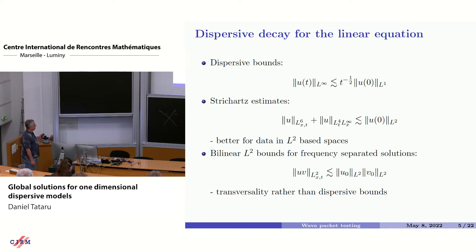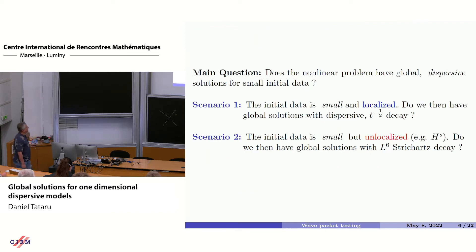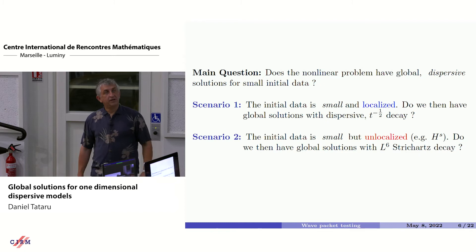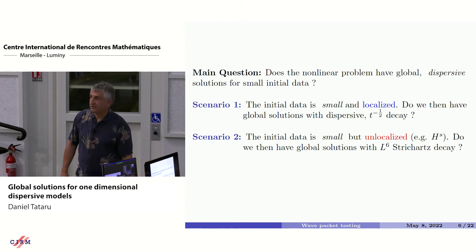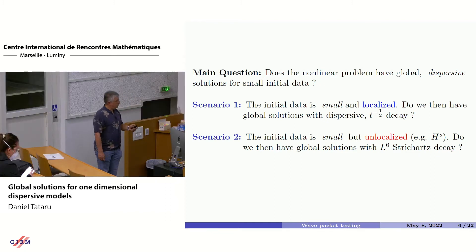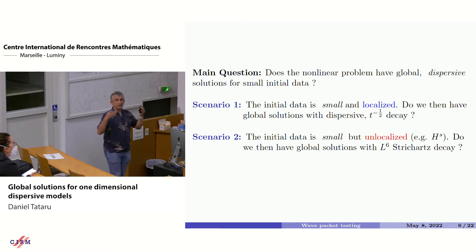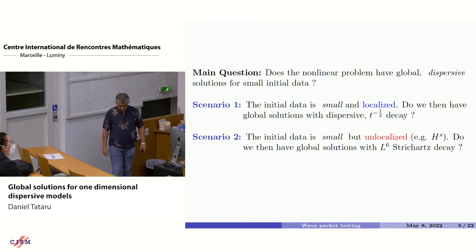All of these things will play a role in our story because we want to look at solutions to the nonlinear equation which share some or all of these properties. Here is the main question we have been interested in for a number of years: we take our nonlinear equation, put some small data to it, and ask do we have global solutions — and not only global solutions, but global solutions with dispersive properties. Of course this is not always the case.